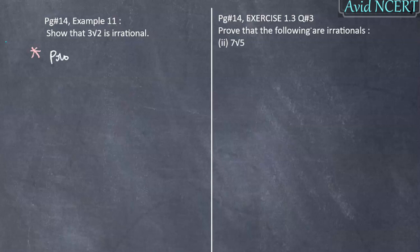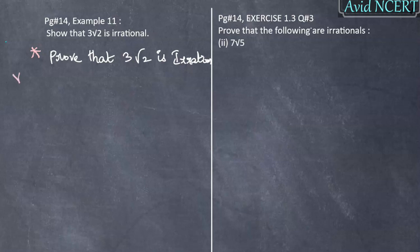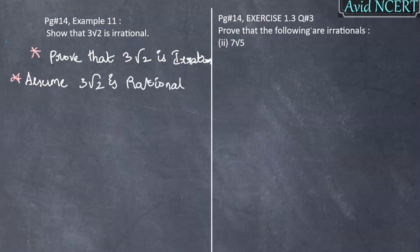Step 1: Prove that 3√2 is Irrational. Step 2: Let's assume that 3√2 is Rational. So if 3√2 is Rational, then it means 3√2 equals A by B, where A and B are Integers.